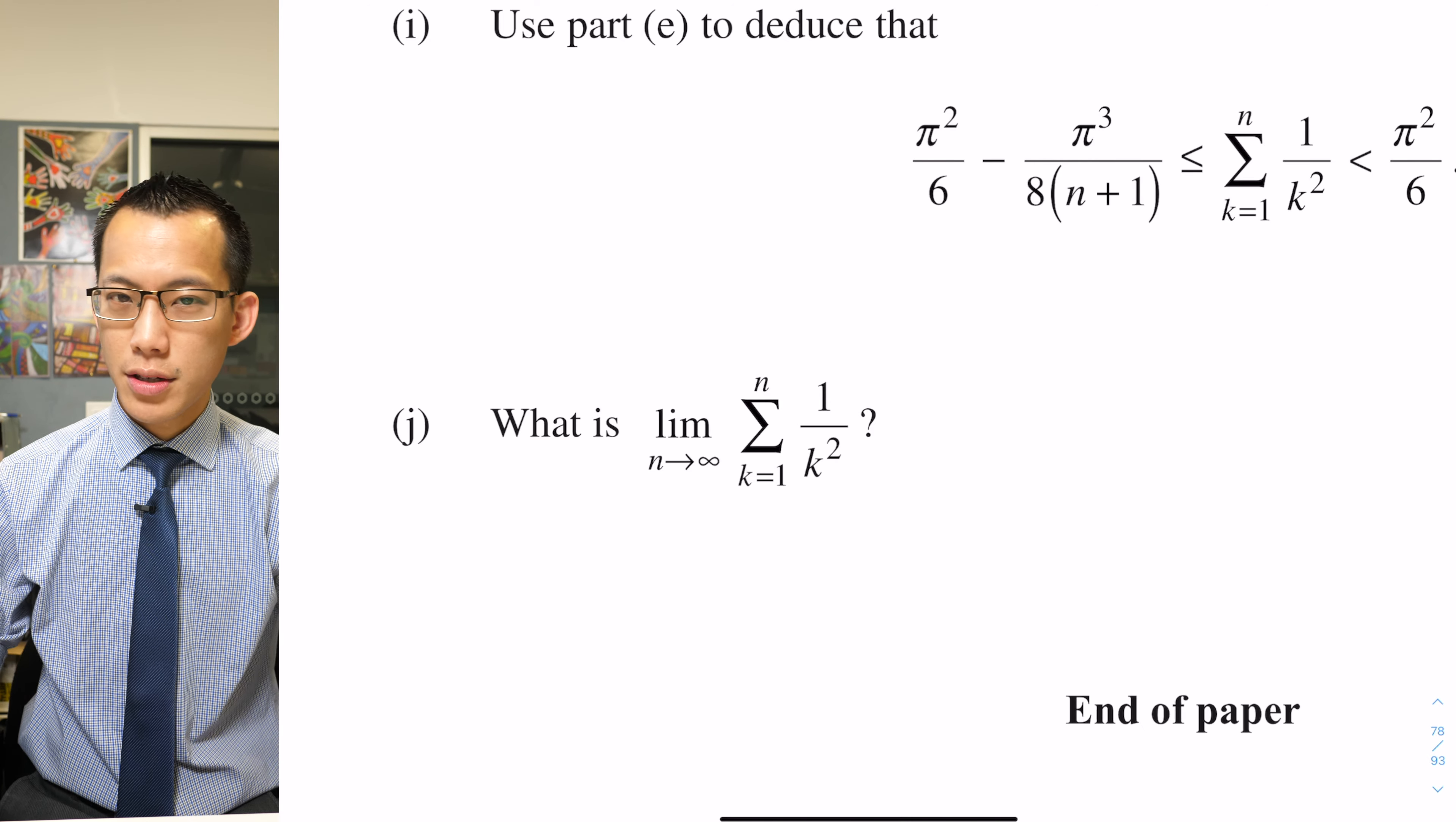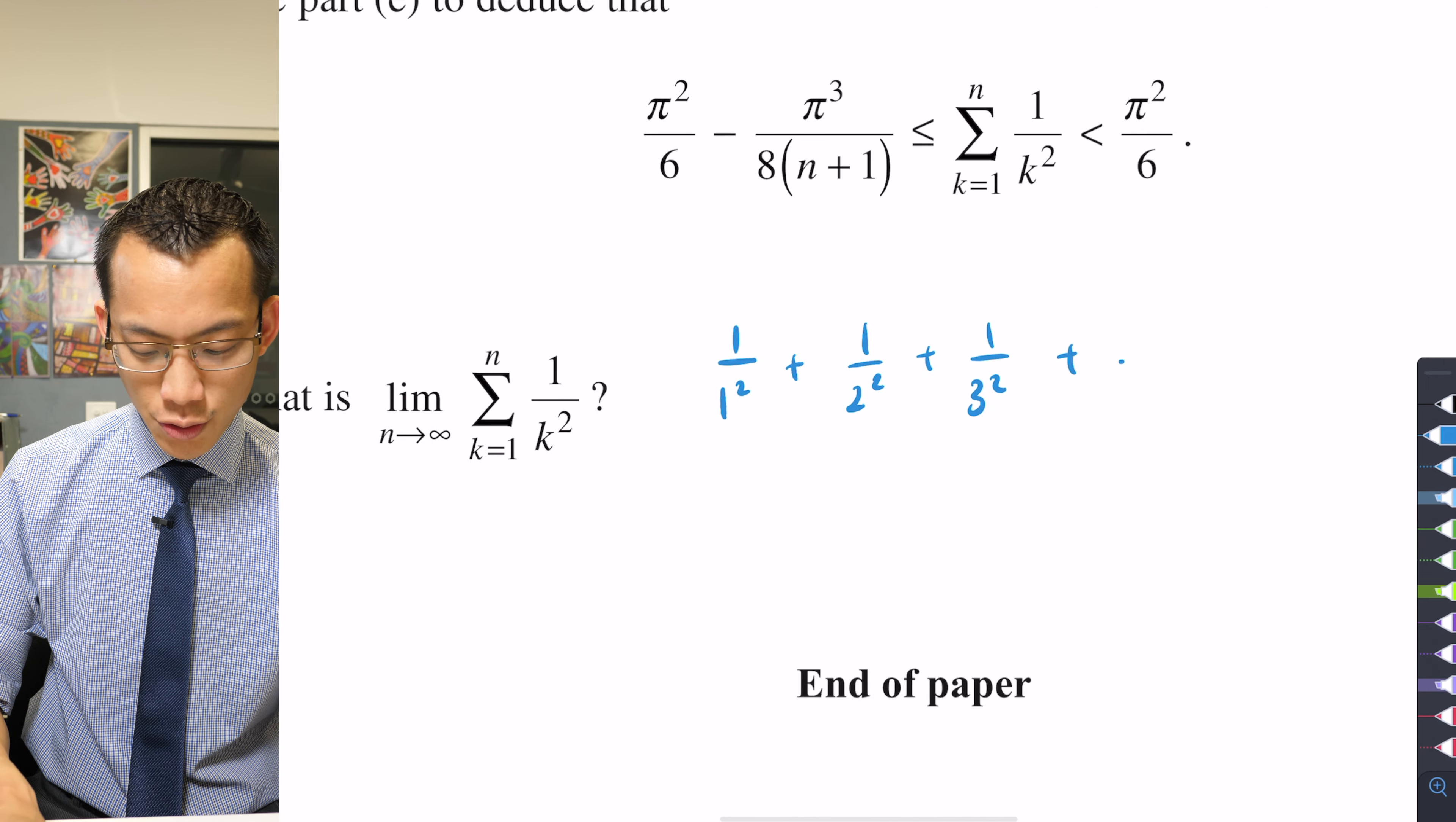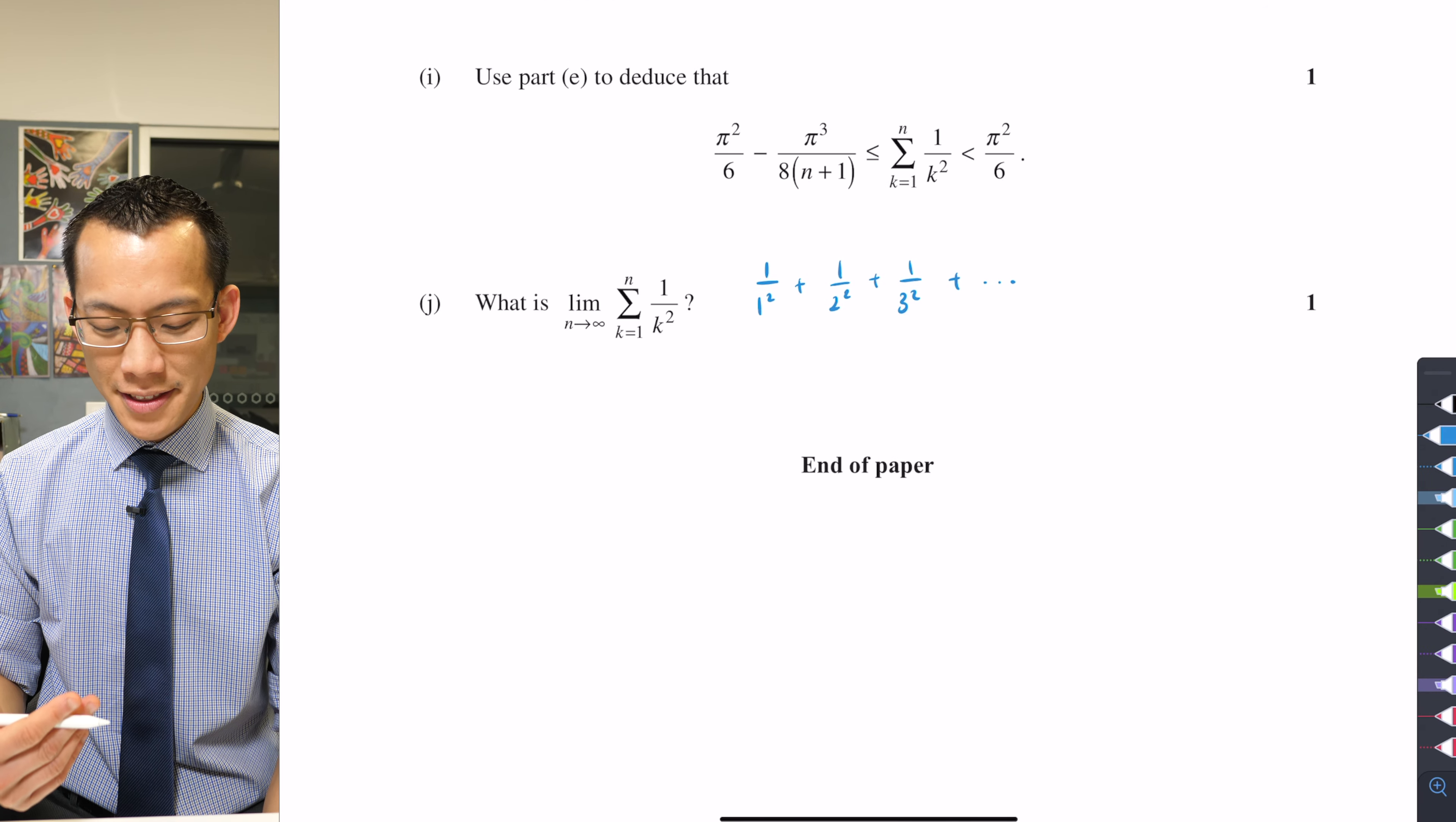The sum of the reciprocals of the squares is actually a famous historical problem, a famous historical math problem. And that's kind of what I think made the exam committee say it would be really cool if we could sneak this in. This actual result, you maybe you've never heard of it, actually has a name.